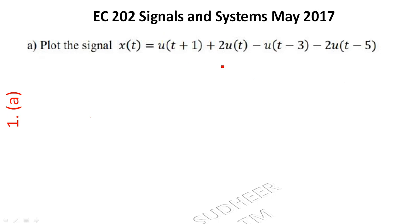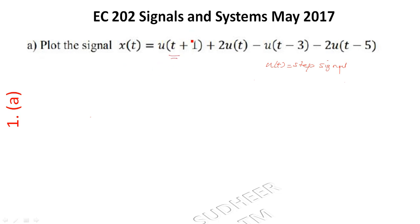u(t) is a unit step signal. For a step signal, from t=0 to infinity the value is 1, and for t less than 0 the value is 0. u(t+1) is one unit advanced, starting from t = -1.